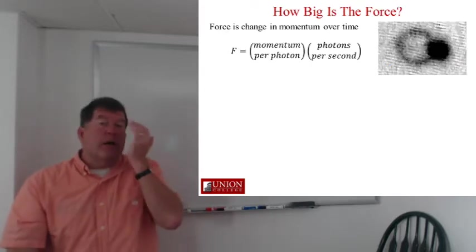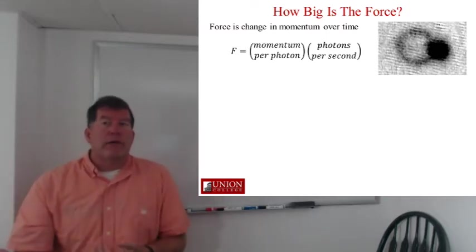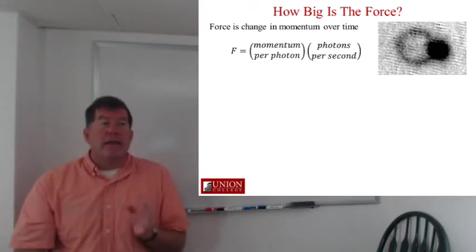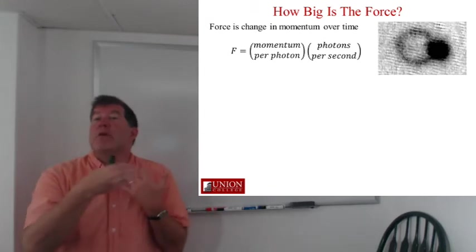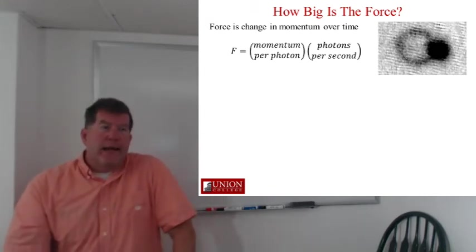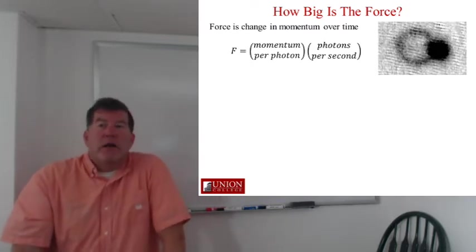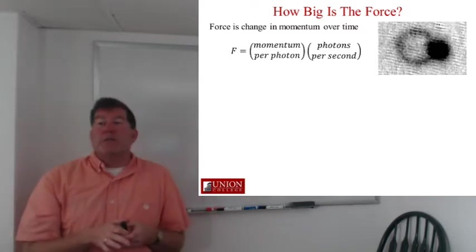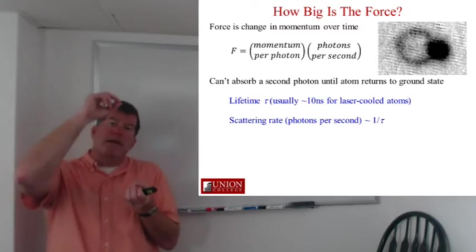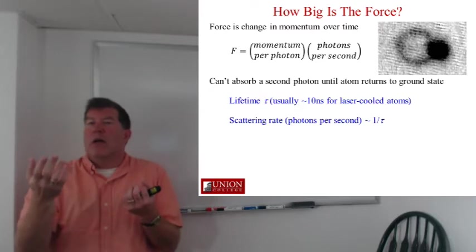So this allows you to add together lots of photons and get a significant change in the momentum of your atoms. How big a force are we talking about? Well, force is going to be change in momentum over time. So if I want to know what the force is, I'm going to need the momentum per photon multiplied by the number of photons per second. How often do I get photons in them? This is another thing we can do sort of a ballpark estimate of and get a number for this. And what we would say is, look, these atoms, they have a lifetime. There's some amount of time you put them into the excited state. There's some amount of time that they stay there before they drop back to the ground state on average.